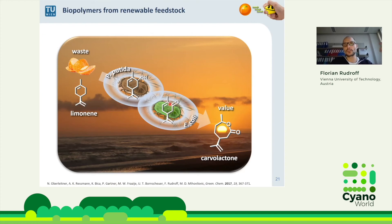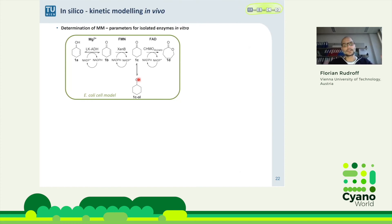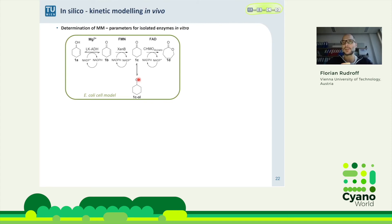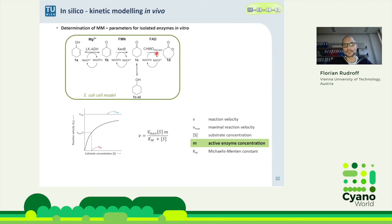This was our idea: waste to value with redox reactions. If we could run this whole cascade in one organism that provides oxygen and redox equivalents internally, that would be ideal — and that's another reason we moved toward cyanobacteria. We also wanted to model our cascade system. We set up an in vivo model based on Michaelis-Menten kinetics, tracking product formation over time, with known cofactors: magnesium, FMN, FAD — all flavin-dependent enzymes requiring NADPH.